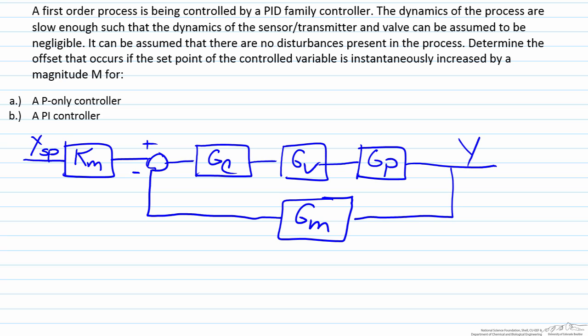So what we're going to look at here is the offset that occurs if the set point of the controlled variable is instantaneously increased by magnitude M. We'll look at a P only controller and a PI controller.